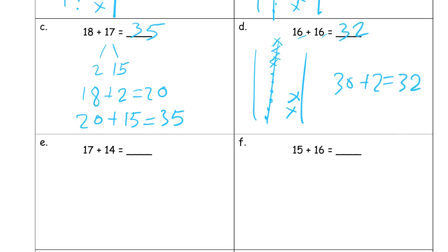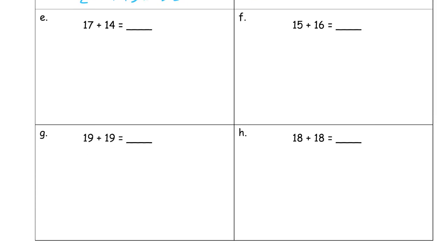17 plus 14. If I try this, I'm going to add the ones first, 17 plus 4, count that up, that's 21, and then add the 10, 31, that's just one of the ways we practiced using number bonds, right, adding the ones first.